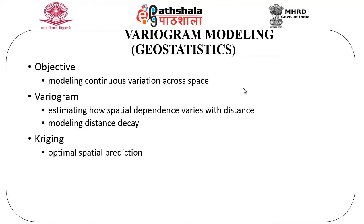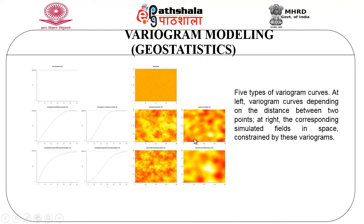There is another modeling technique called Kriging, which is useful for representing optimal spatial prediction. This is an example variogram modeling taken from Wikipedia. It has five types of variogram curves. The variogram curves depend on the distance between two different points, and on the right, the corresponding simulated fields in space are constrained by these variograms.